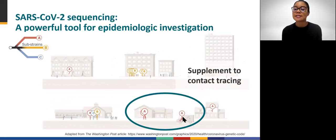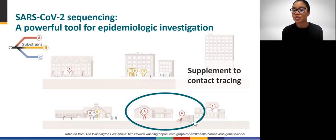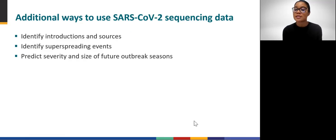Another powerful use of genome sequence data is to supplement contact tracing. In this community, a plumber is known to have been in contact with members of various households that they service. Sequencing SARS-CoV-2 samples from the plumber and household members shows whether they all have acquired the same substrain. Finding that they all have substrain A supports the epidemiologic contact tracing data, suggesting the plumber may have spread SARS-CoV-2 to these contacts. Additional uses include identifying new introductions into a population, identifying super-spreading events, limiting new viral transmission through contact tracing, and using sequence data as inputs for modeling studies that predict the severity and size of future outbreaks.